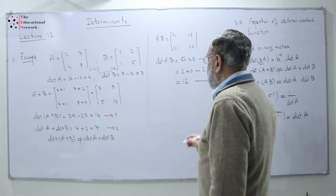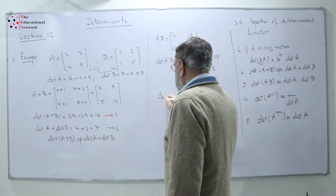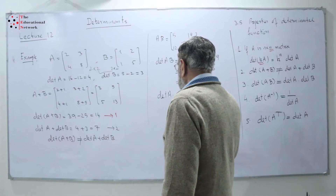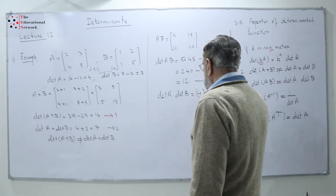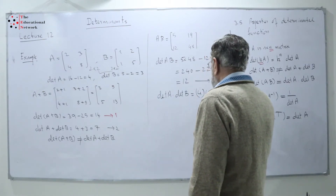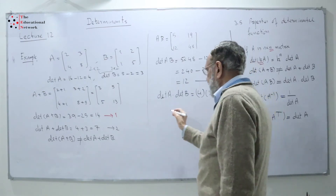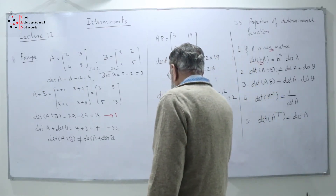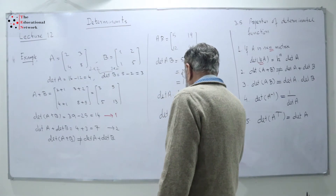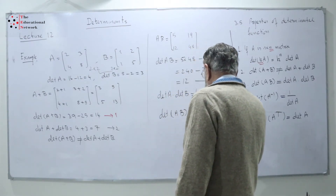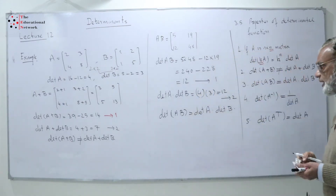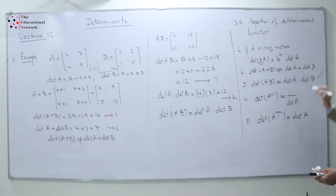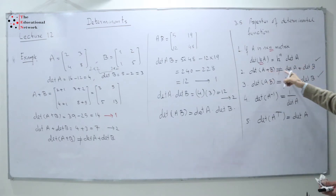This is result 1. Now I take the product of determinant of A and determinant of B: determinant of A is 4 and determinant of B is 3, so the result equals 12. This is result 2. From results 1 and 2, I can say determinant of AB is equal to determinant of A times determinant of B — that confirms property 3.